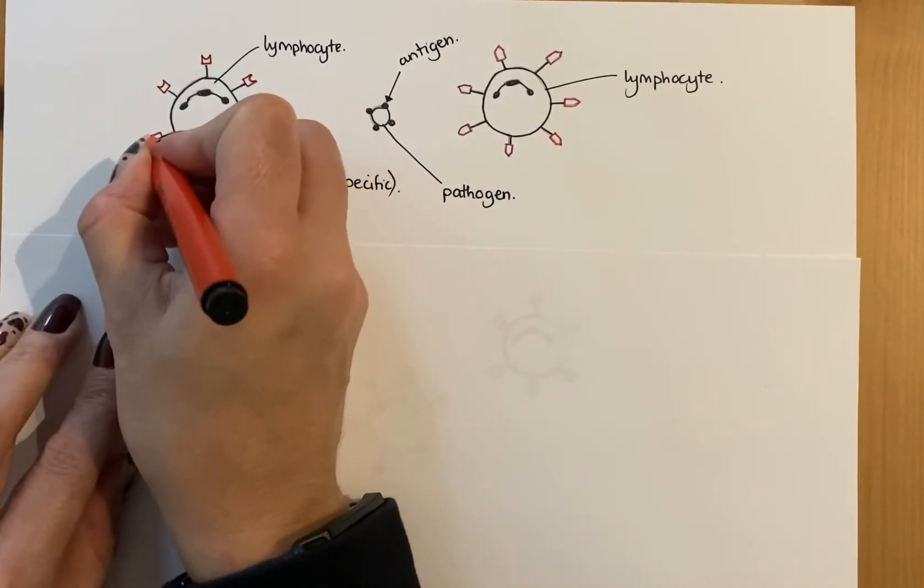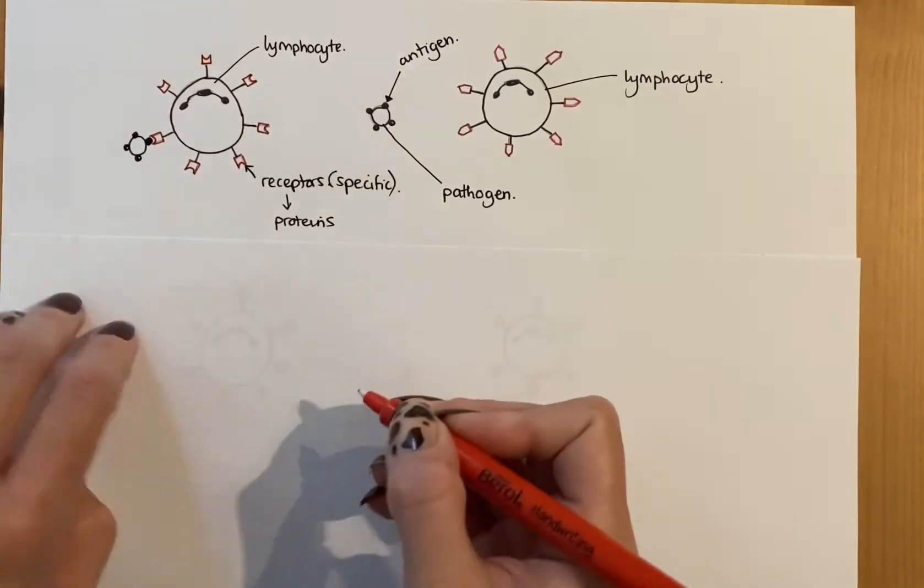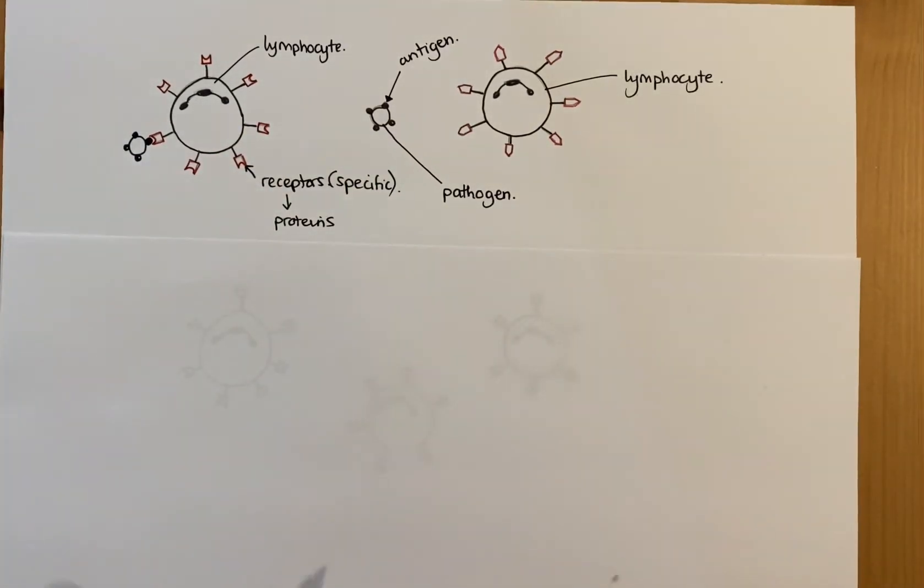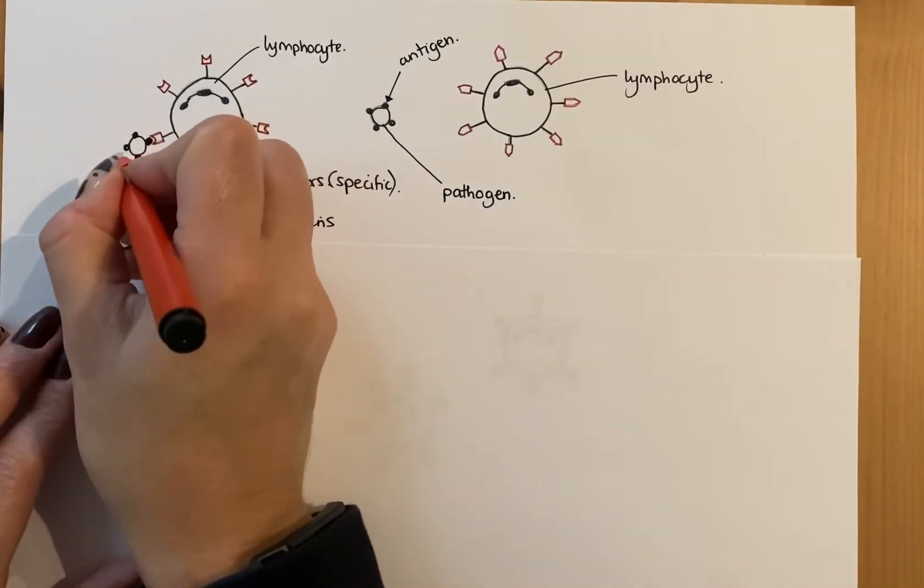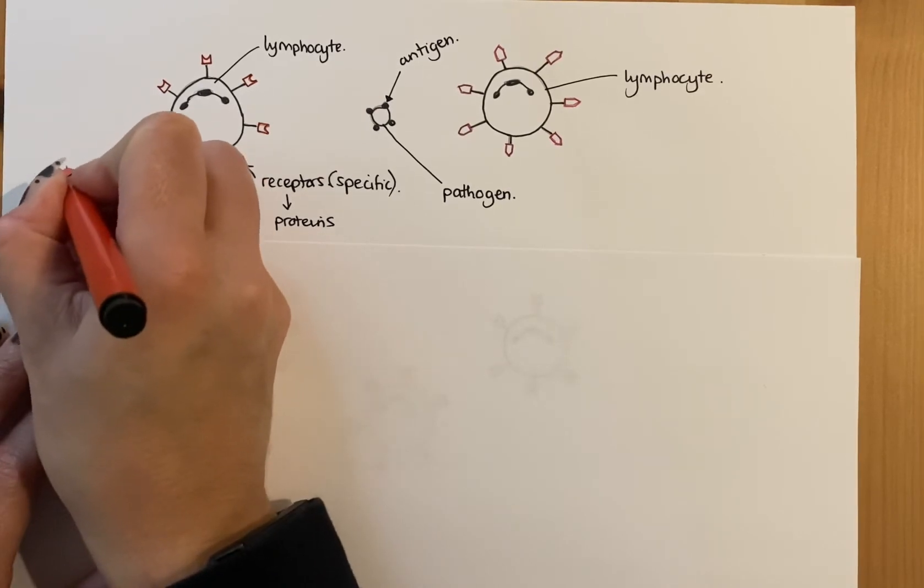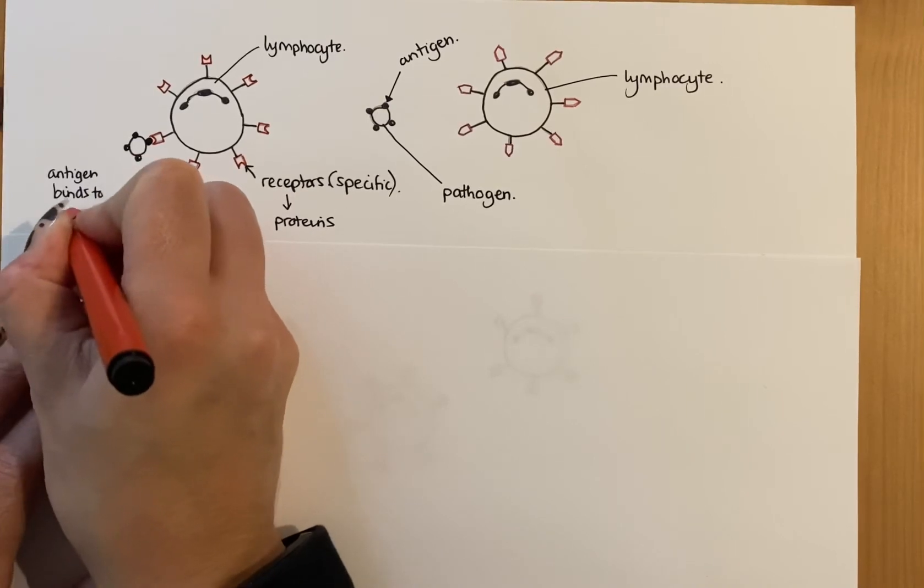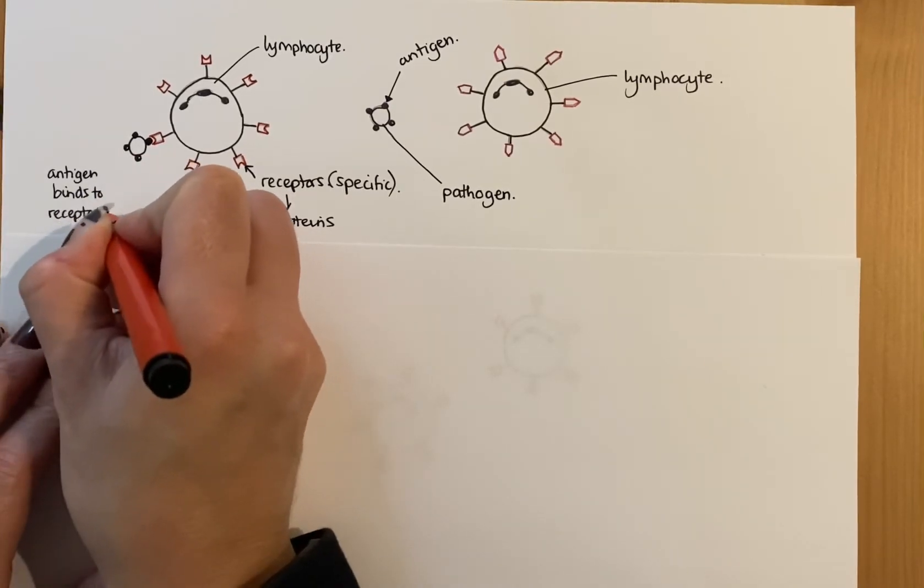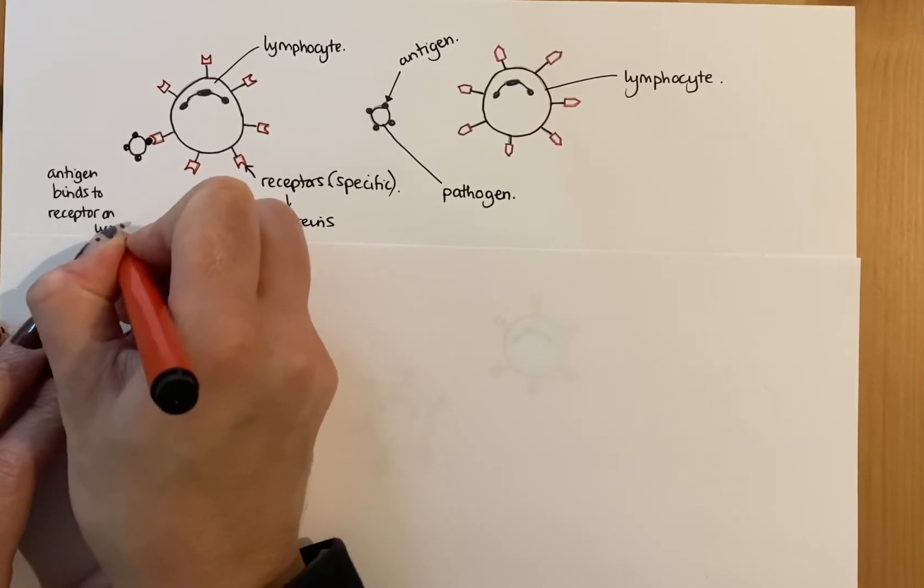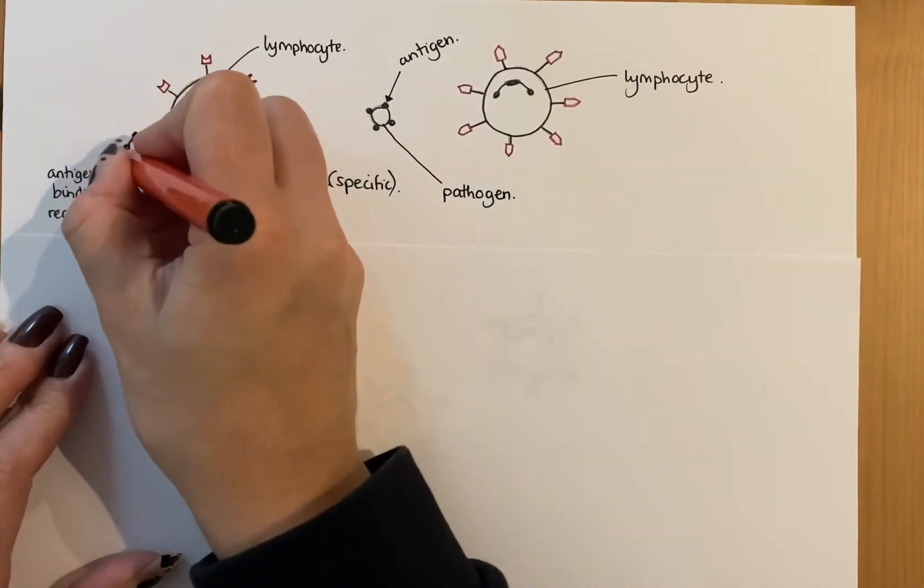And it's only this one that will match and bind to that antigen. So what happens is that antigen and the pathogen that's part of it, or the antigen that is part of the pathogen, will bind to that receptor. So the antigen on that foreign pathogen binds to the receptor on the lymphocyte. And that's what's shown here.